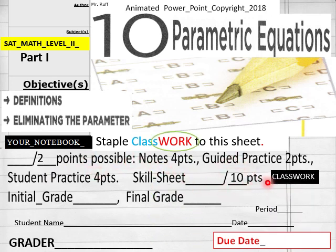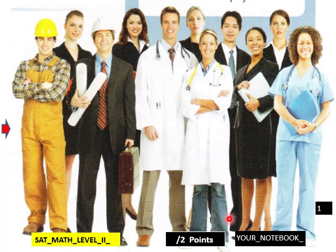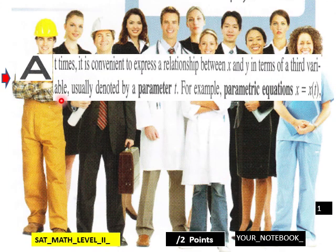Have that out: student name, date and period, due date for online learners and home schoolers. Let's get right into page one here. At times it is convenient to express a relationship between X and Y in terms of a third variable.